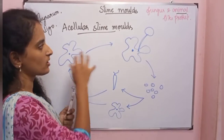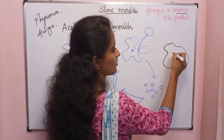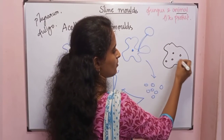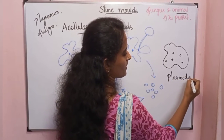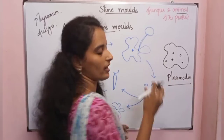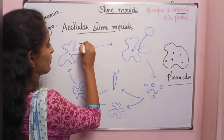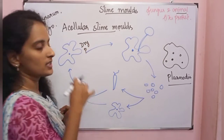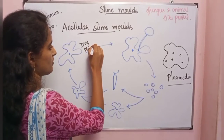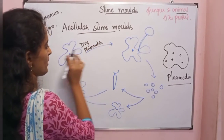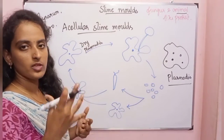In acellular slime molds, the aggregated form is called plasmodia — a mass of cytoplasm containing multiple nuclei. The name for this aggregation is plasmodia. When unfavorable conditions occur, such as dry conditions in summer, the plasmodia responds to environmental stress.